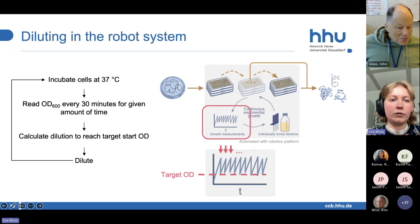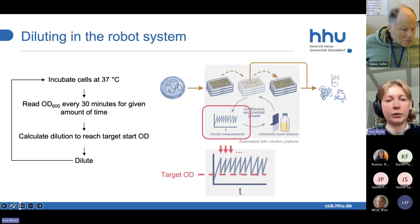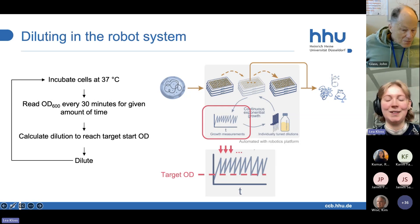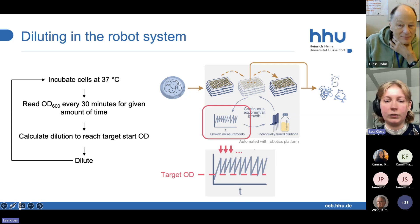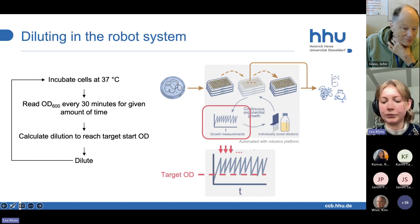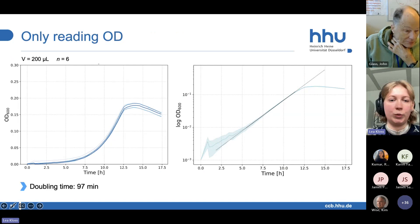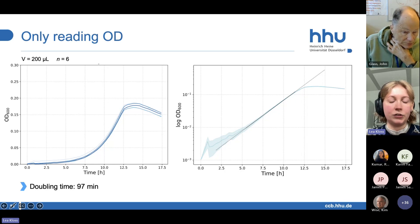This is our workflow. We incubate the cells at 37 degrees, we read the optical density every 30 minutes for a given amount of time, calculate a dilution to reach a target start OD, and then dilute and repeat for as long as possible. This is what we want to see: growth, dilution, growth, dilution, each time reaching the target start OD. If we simply grow the cells in the robot system without any dilutions, as you can see, we get a nice growth curve and not really a change in the doubling time.